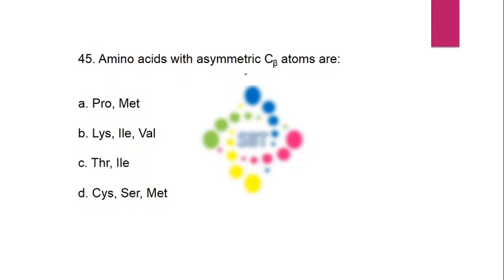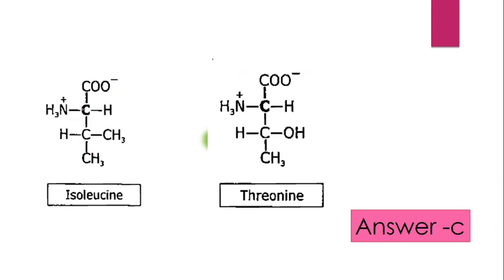Question on amino acids with an asymmetric beta carbon: which amino acids contain more than one chiral carbon? The correct option is threonine and isoleucine. In isoleucine, you can see two chiral carbons — the alpha carbon and the beta carbon — each with four different groups attached. Threonine similarly has a chiral beta carbon in addition to the alpha carbon.